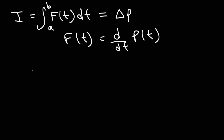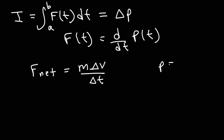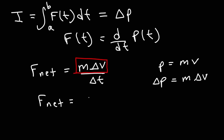Going back to the equation where the net force equals M times delta V over delta t — we know momentum is mass times velocity, and the change in momentum is mass times the change in velocity. So we can replace that part with delta P. The net force acting on an object is equal to the rate at which the momentum of that object is changing. So force is basically the derivative of the momentum function.